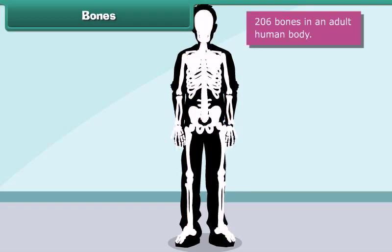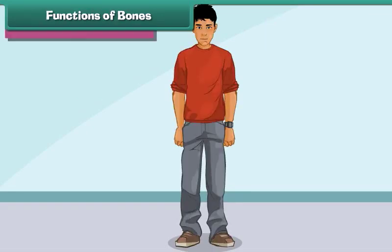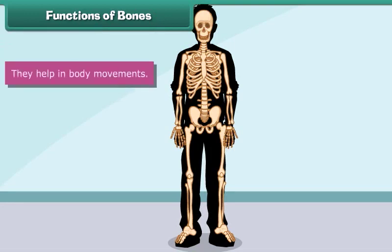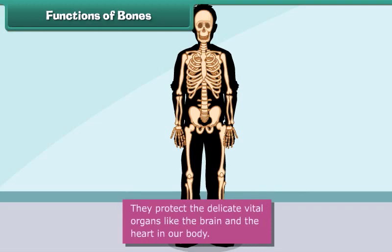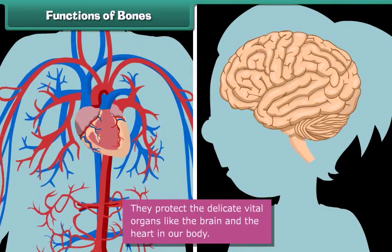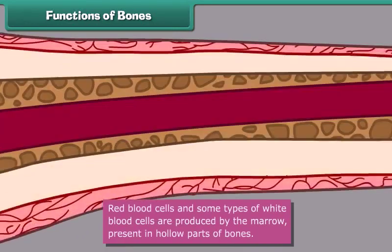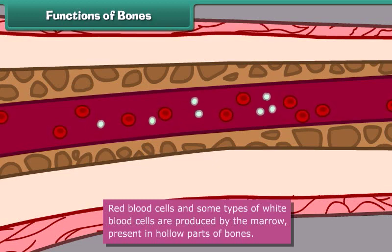What functions do bones perform? Come, let us know. Bones give shape and support to the body. They help in body movements. They protect the delicate vital organs like the brain and the heart in our body. Red blood cells and some types of white blood cells are produced by the marrow present in hollow parts of the bones.